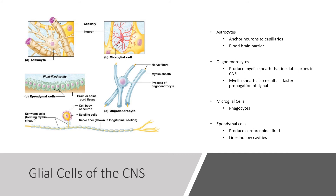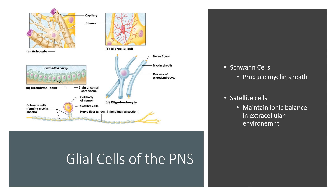There are also microglial cells, which are phagocytic cells. There are ependymal cells, which produce cerebrospinal fluid and line hollow cavities. The glial cells of the peripheral nervous system include Schwann cells, which produce myelin sheath in the peripheral nervous system. There are also satellite cells, which function in maintaining ionic balance in the extracellular membrane.